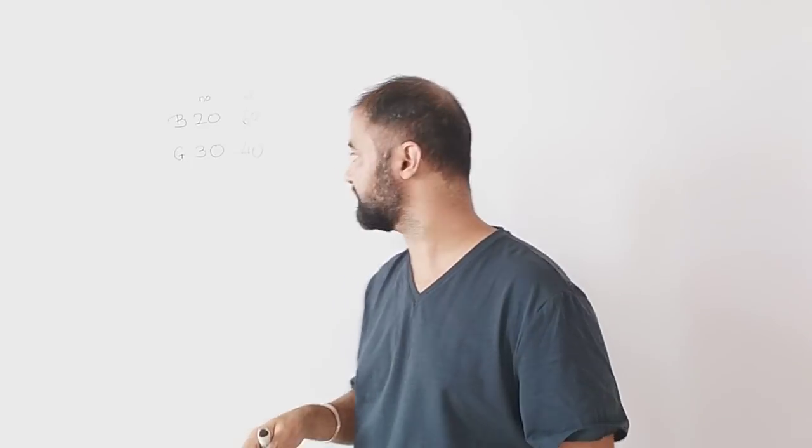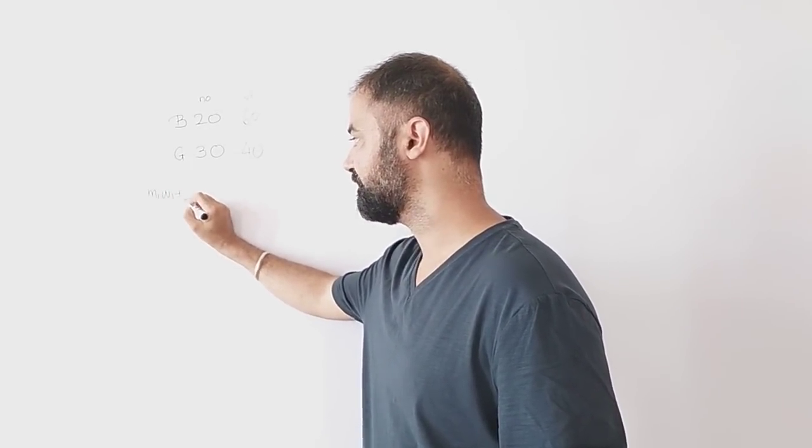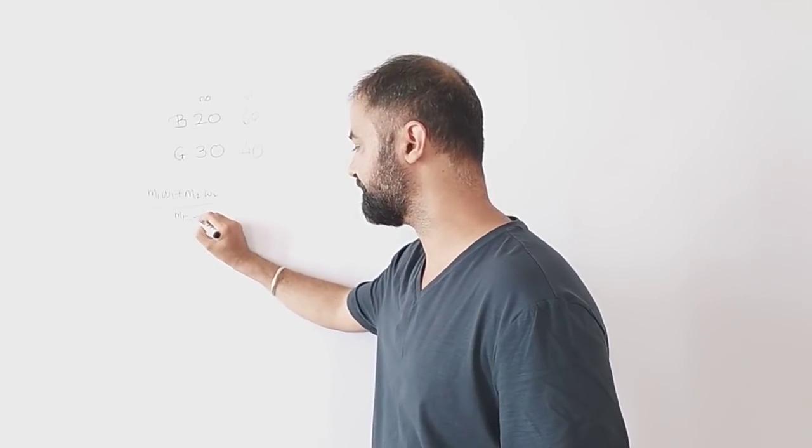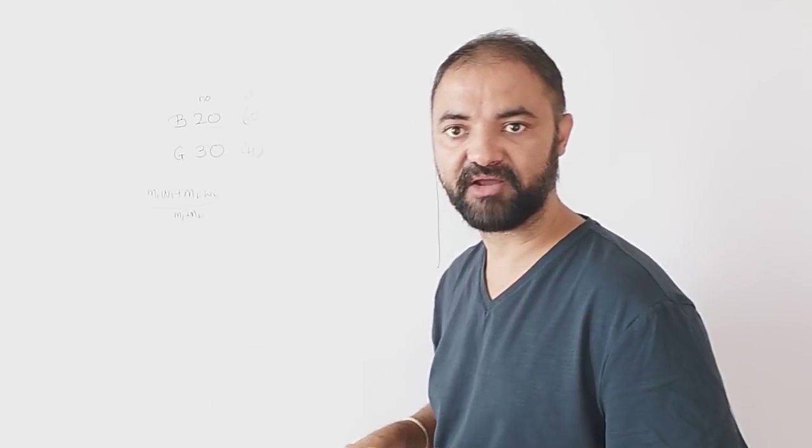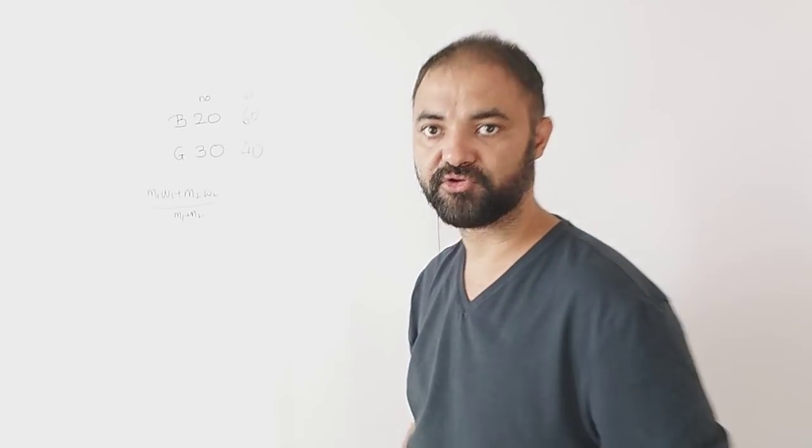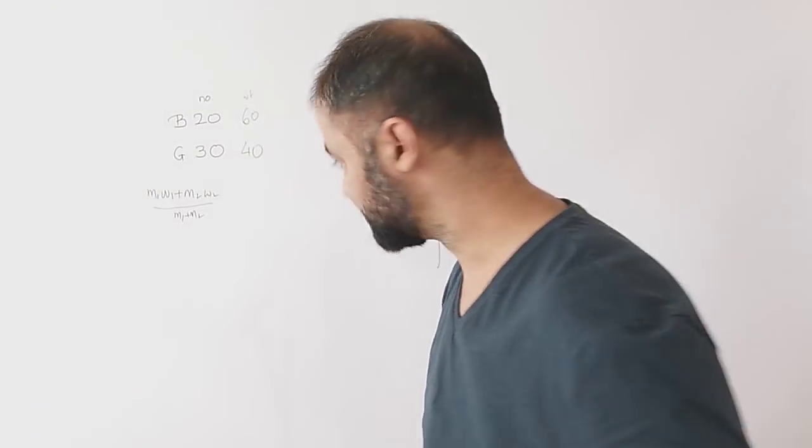The weighted average formula is m1*w1 plus m2*w2 divided by m1 plus m2, where m is the number of students. Using this formula for ratios, let me put the values here on the board.